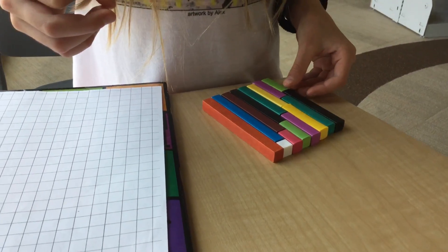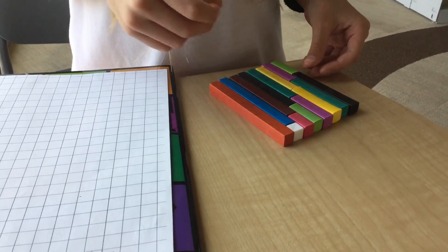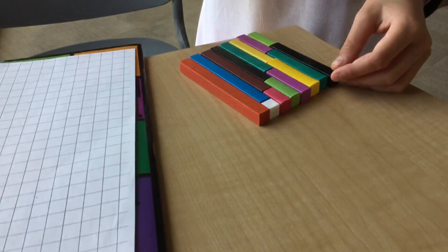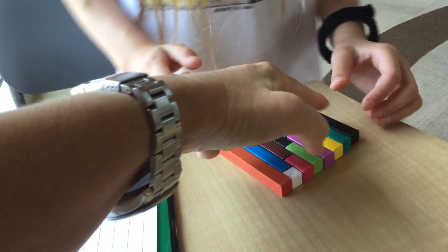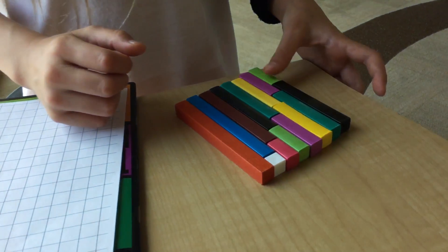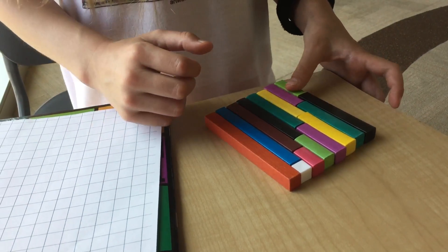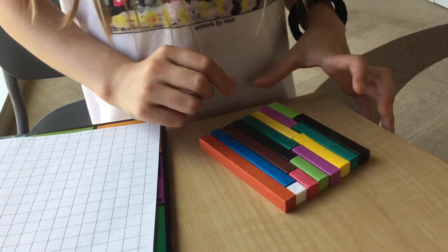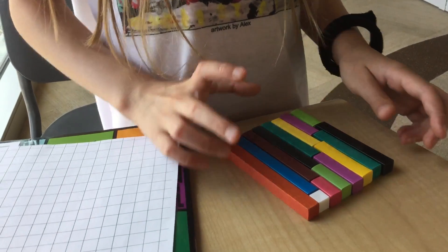Can you tell me that equation you just made? The equation that you just put together, this one here. What is that? 3 plus 7 equals 10. Fantastic.